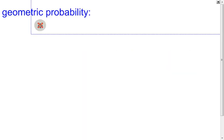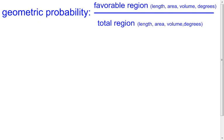Now, geometric probability is very similar to regular old probability, and we're going to look at it as a fraction, or that's how it's calculated, and we're going to look at it as favorable region over total region.